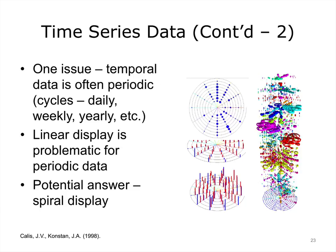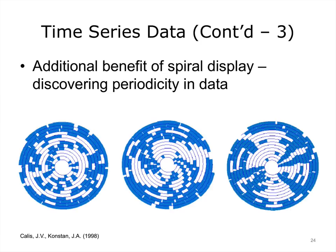Linear graphs are the simplest and most common ways to represent time series data. However, these data are often periodic, following cycles such as seasons. A better way to represent periodic time series data is in a circular or spiral way. An additional benefit of spiral displays is that changing their temporal cycle can help to discover periodicity in data.